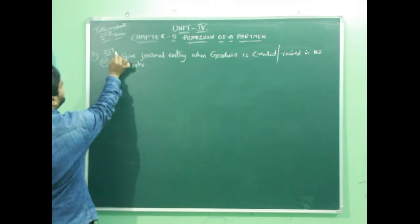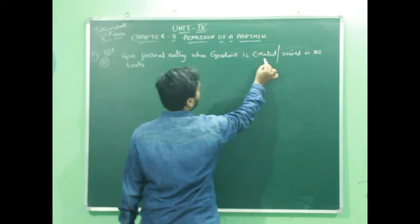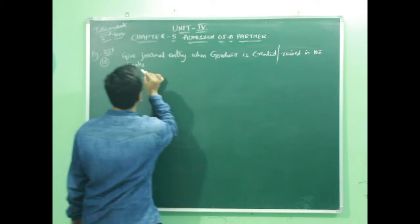Let us have a problem. Page number 237, question number 18. Give general entry when goodwill is created or raised in the books.